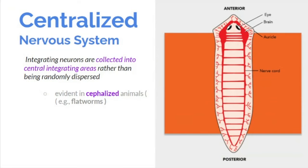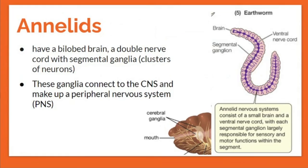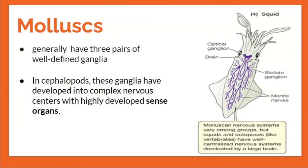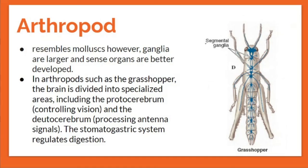The centralized nervous system involves neurons collected into central integrating areas rather than being randomly dispersed, and is evident in encephalized animals — those with heads and brains. Annelids have a bilobed brain or double nerve cord with segmental ganglia — clusters of neurons — that connect to the CNS and form a peripheral nervous system. Mollusks generally have three pairs of well-defined ganglia, and cephalopods' ganglia have developed into complex nervous centers with highly developed sense organs.